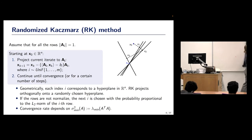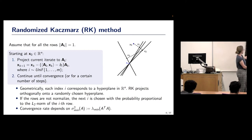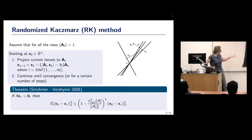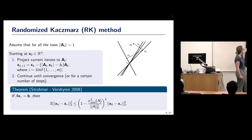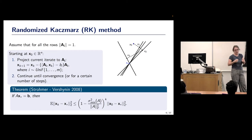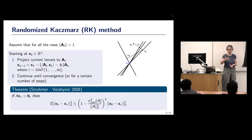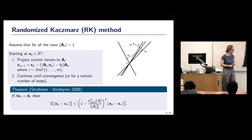The convergence of this method is hard to quantify because it really depends on the underlying system. This is the method — projection — and we assume the rows are normalized. The key breakthrough was in 2008 when randomness was actually introduced. So we don't project on equations one by one but rather select a new equation at random; then we can talk about convergence in expectation. We select the next row with probability proportional to its L2 norm — precisely what was discussed in the previous talk.